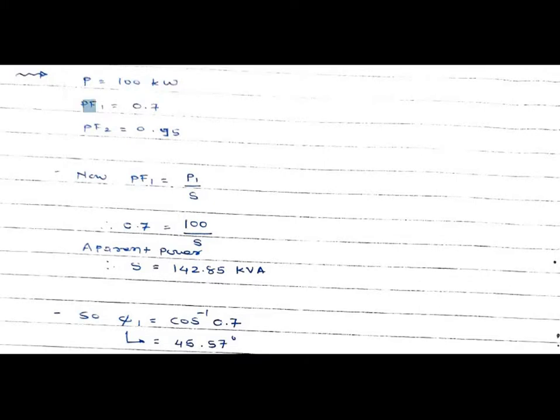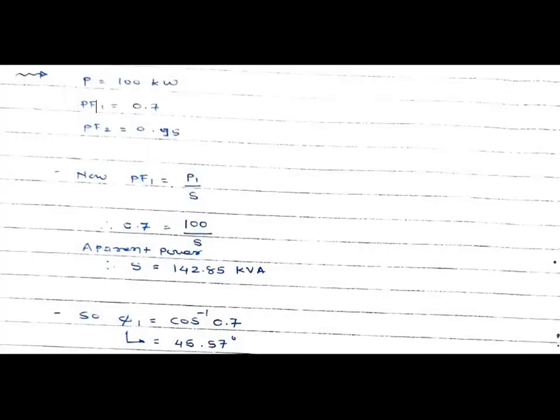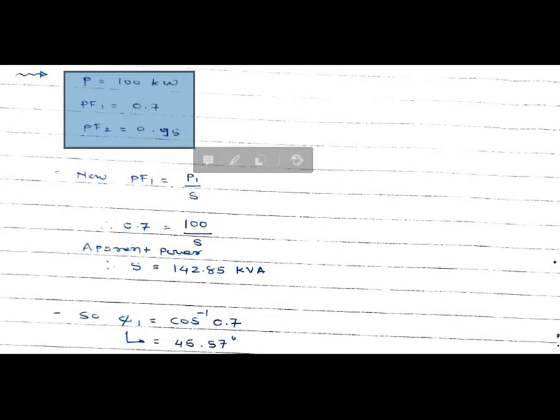Power factor 1 is equal to 0.7, and power factor 2 is equal to 0.95. Power factor 1 is the power factor from where we have to improve it. Power factor 2 is equal to 0.95. So we have to improve the power factor from 0.7 to 0.95.